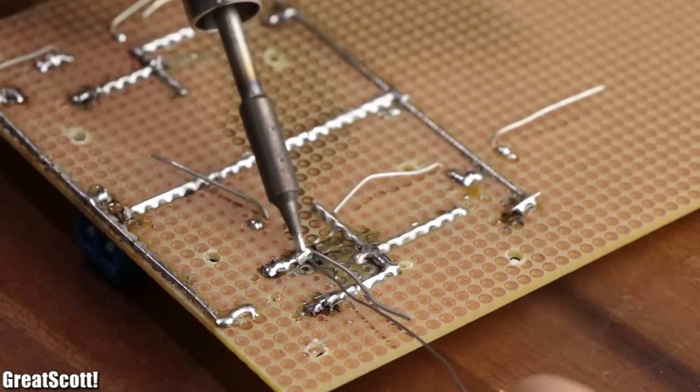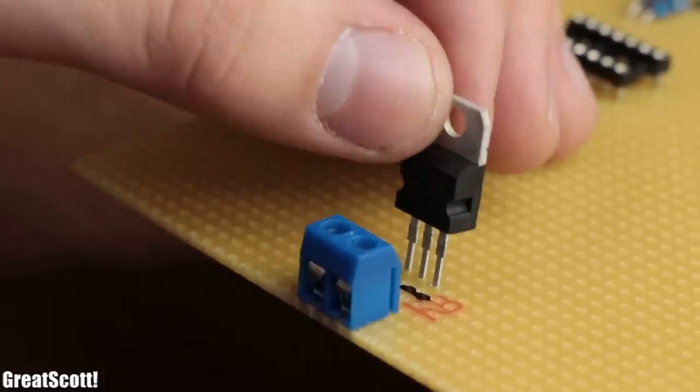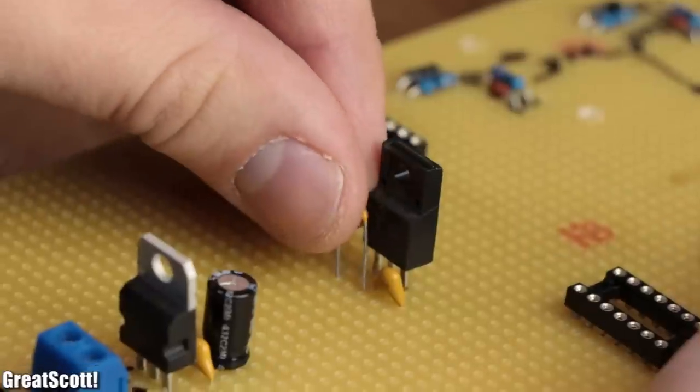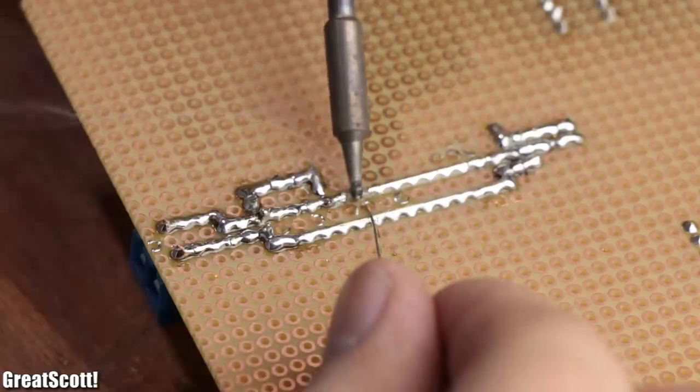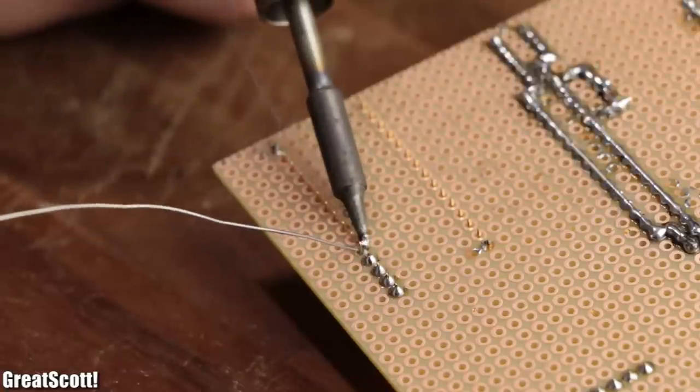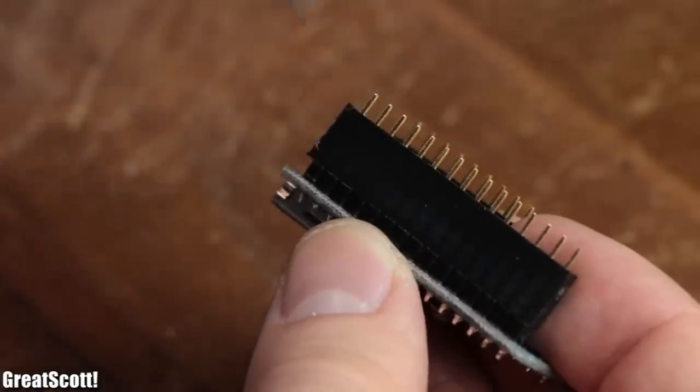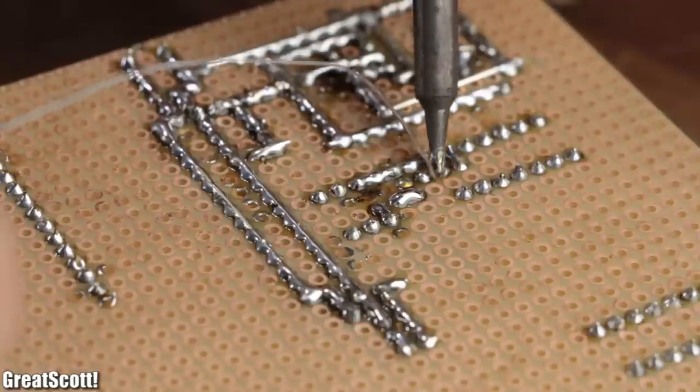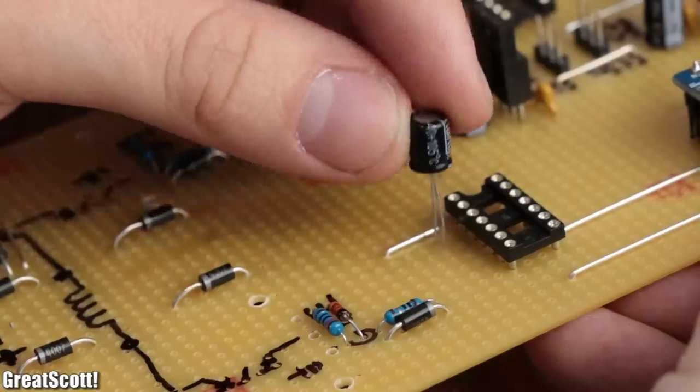Once that was done, I moved over to the other half of the perfboard to create the control circuit. I started off with the voltage regulator and the capacitors and continued with the IC sockets, the Arduino Nano sockets which consisted of female headers, the 555 timer oscillator, the Schmidt trigger, and finally the two MOSFET drivers.